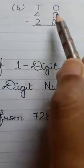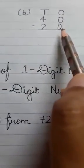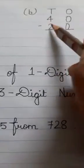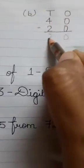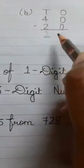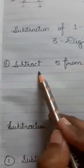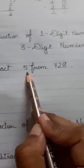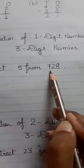Next question: tens and ones — forty minus twenty. Zero minus zero is zero, then four minus two is two. Now here is subtraction of a one-digit number from a three-digit number. Here we subtract five from seven hundred twenty-eight.